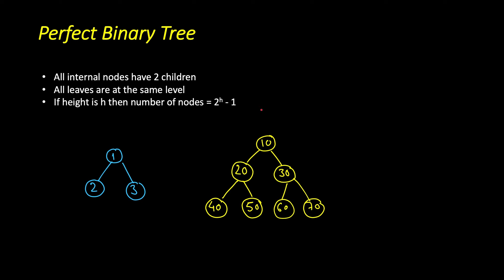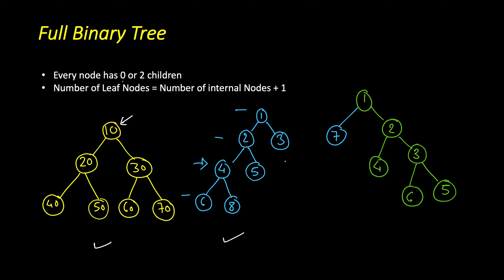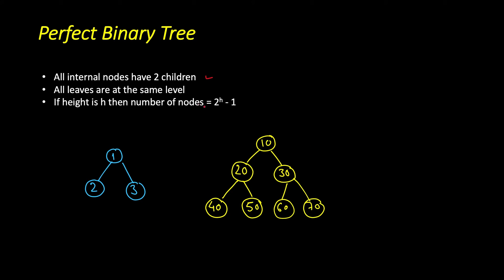So that is the definition of complete binary tree. Next is perfect binary tree, which is in a real sense completely full at all the levels. All the internal nodes have two children and all the leaves are at the same level. Comparing with the full binary tree example: all internal nodes have two children, but all the leaves are not at the same level — some are at level four, one is at level three, one is at level two. So for a perfect binary tree, all leaves must be at the same level; this is the additional constraint.